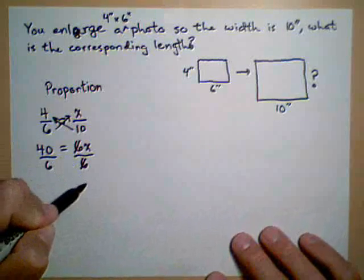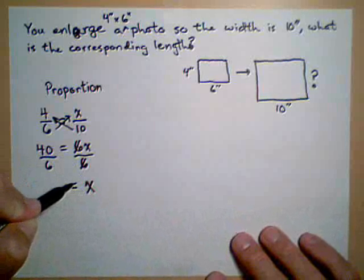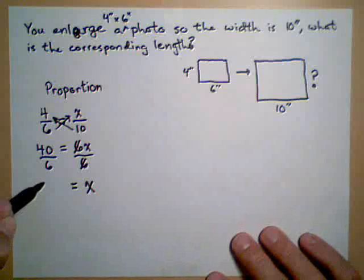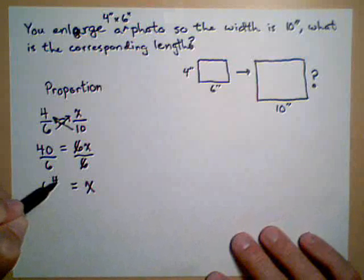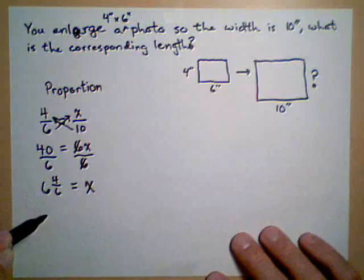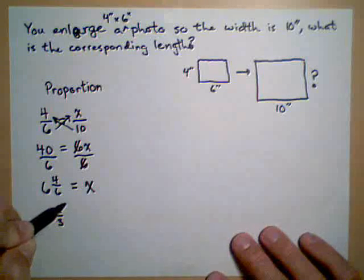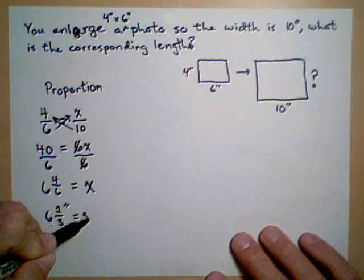Because those cancel, we get x equals 40 over 6, or we can reduce this down to 6 and 4 sixths, or 6 and 2 thirds, and remember this was in inches, so there's our new height.